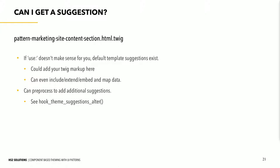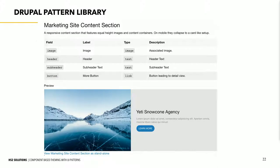We have now defined this thing and it's showing up in that pattern library page. If you just turn on the module and look at the patterns library page, there's nothing there until you define the patterns you want to see. We have this thing — the question again is how do we get Drupal to talk to it and get Drupal's data into it. From my experience getting familiar with this module and talking to people who've used it for the first time, this seems to be the piece that people get tripped up on. So how do you expose these patterns in Drupal and feed your data into them?